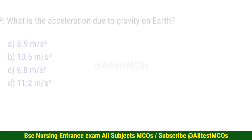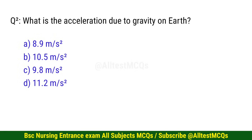Question number 2. What is the acceleration due to gravity on Earth? The correct option is C: 9.8 m/s².